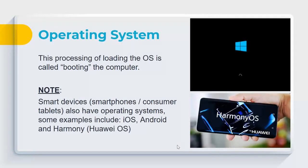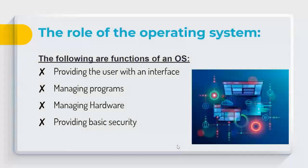Smart devices also have operating systems — iOS, Android, and Harmony (Huawei's OS). Another option found on some tablets and laptops is Chrome OS, used on Chromebooks and Chrome tablets, which only runs Google programs. Chrome OS is less popular than Apple and Microsoft systems, and while it works with Android, Android is far more popular for phones.